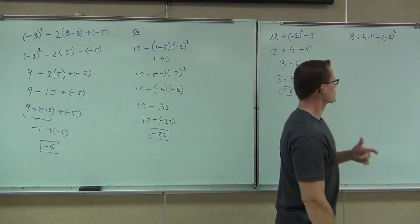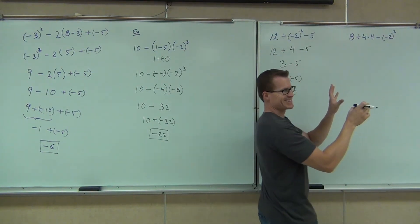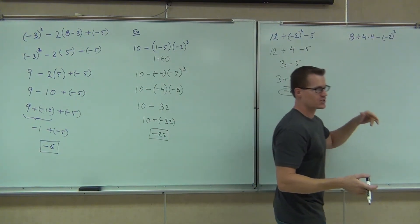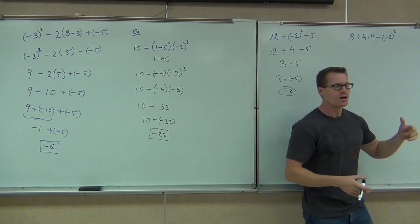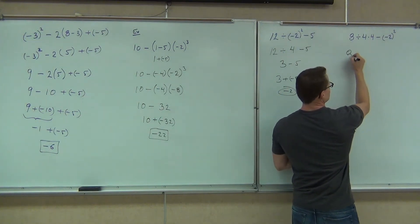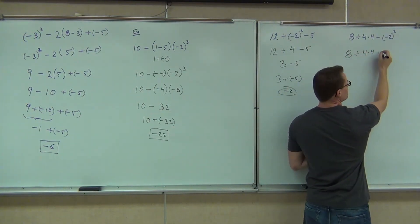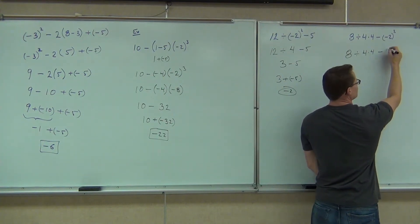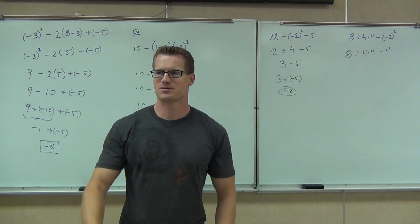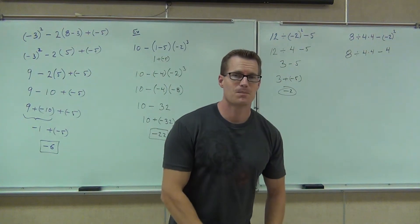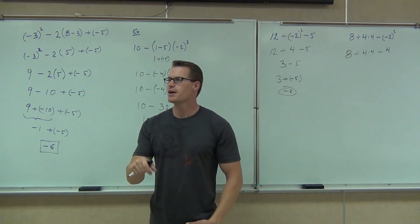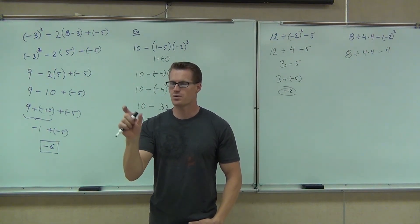So on this problem, we're going to look for parentheses. We don't have any parentheses to actually do. We look for our exponents. I'm going to ask you again — does the negative go with the two or not? It's in the parentheses. Yes, it goes. So we'll have our 8 divided by 4 times 4 — leave all that alone — minus 4. Next up, did you do the multiplication or did you do the division? Division. Good. If you did the multiplication, we're out of order. We need to go from left to right with multiplication and division.